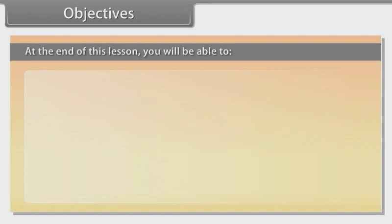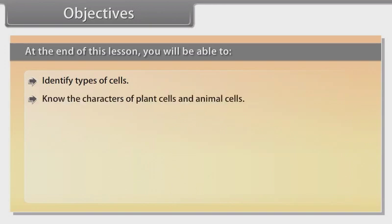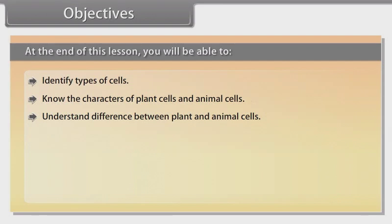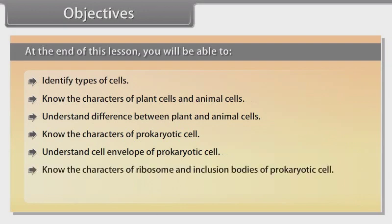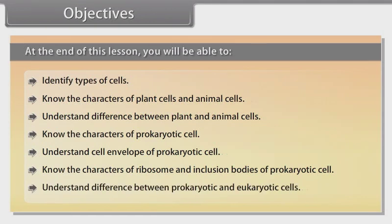At the end of this lesson, you will be able to identify types of cells, know the characters of plant cells and animal cells, understand the difference between plant and animal cells, know the characters of prokaryotic cells, understand the cell envelope of prokaryotic cells, know the characters of ribosome and inclusion bodies of prokaryotic cells, and understand the difference between prokaryotic and eukaryotic cells.